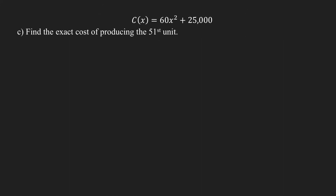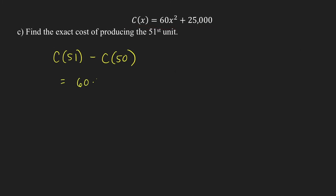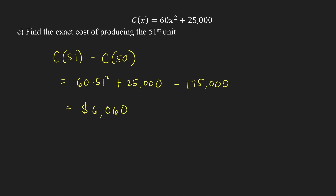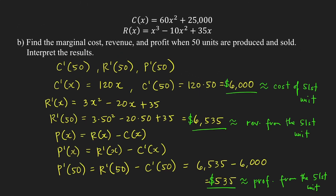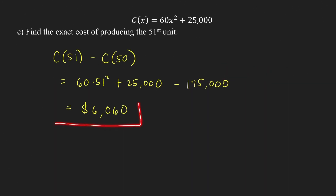For part (c), the exact cost of producing the 51st unit is c(51) - c(50). Using the cost function: c(51) = 60(51²) + 25,000, minus c(50) = 175,000, which equals 6,060 dollars. Note that in part (b) we approximated this cost as 6,000, which is close to the exact cost of 6,060.